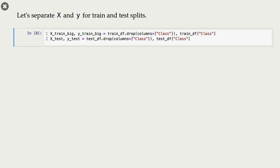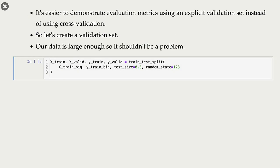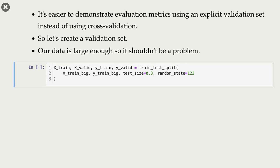In 571, we have been using cross-validation whenever possible. We didn't really work with a single validation set. But for this lecture, for demonstration purposes of these evaluation metrics, I am going to use a single validation set. How can we create this single validation set? We can call train_test_split on our X_train_big and Y_train_big.